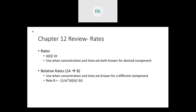Chapter 12 covers reaction rates. For a simple rate of a specific species, you use the change in concentration divided by the change in time. If they give you the change in concentration of species B and the change in time, you simply plug into that equation.